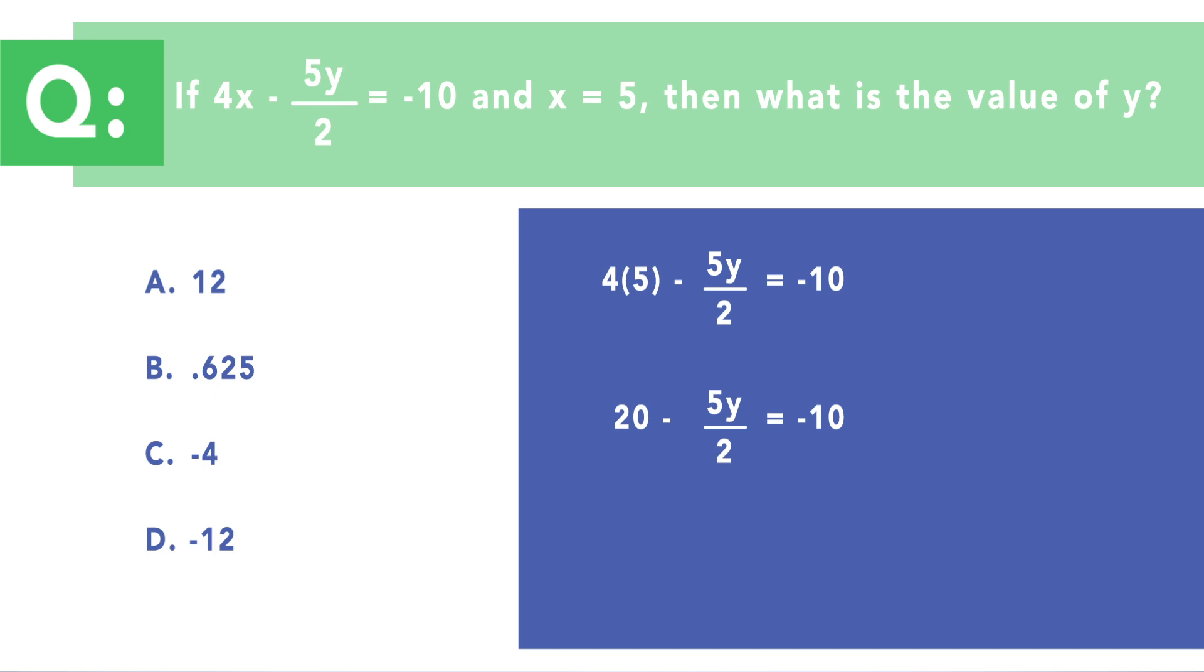Next, 20 can be subtracted on each side of the equal sign in order to get the variable y closer to being alone. So this is going to look like negative 5y over 2 equals negative 30.